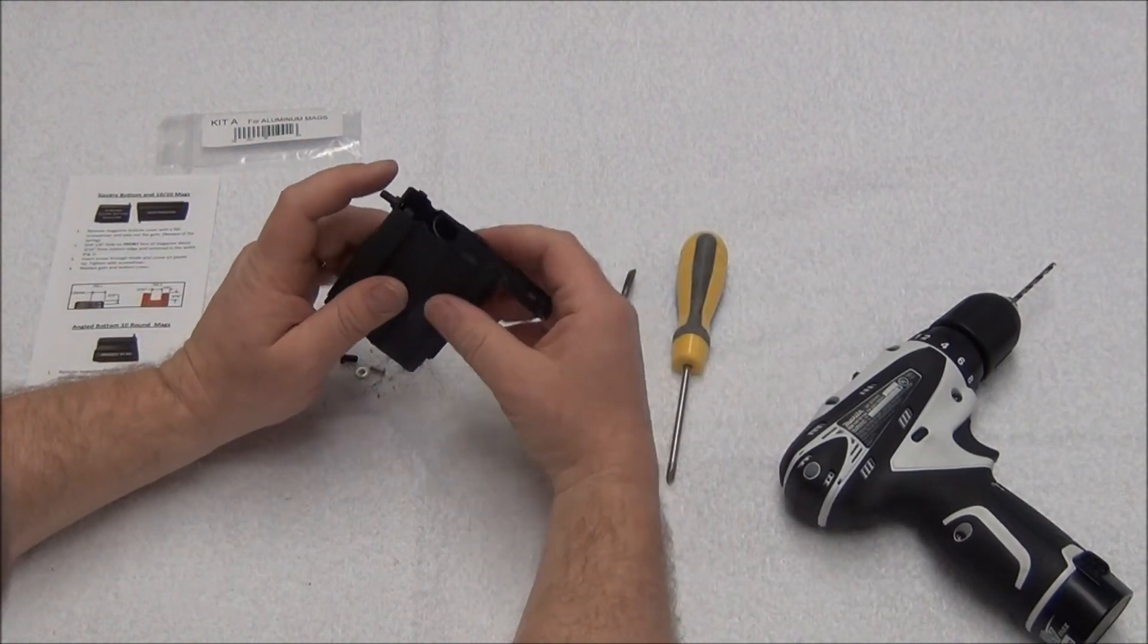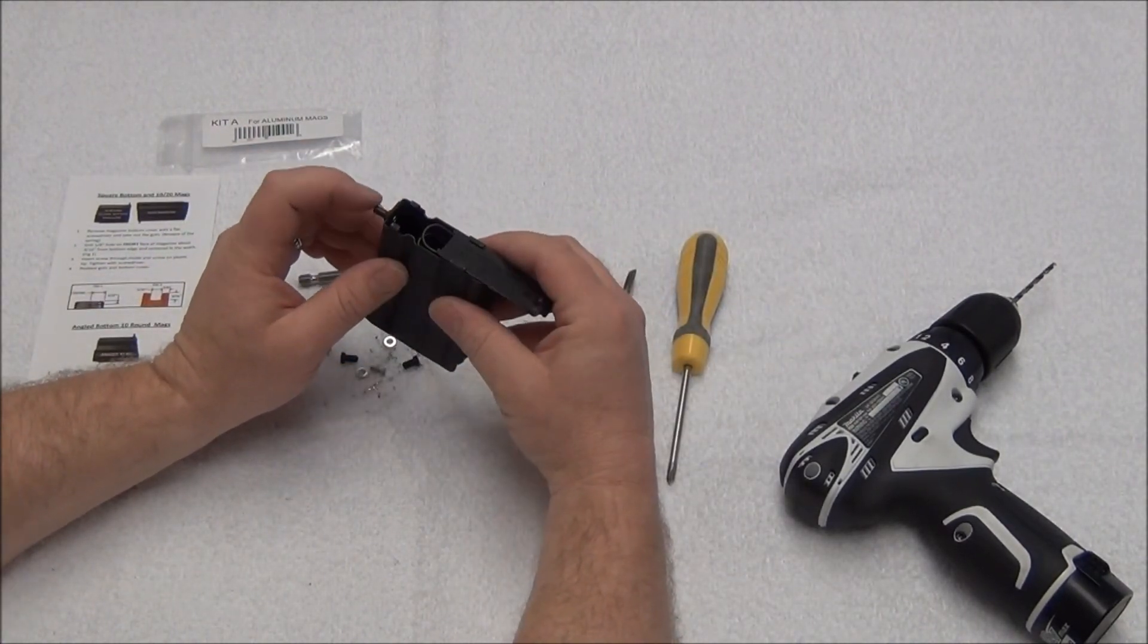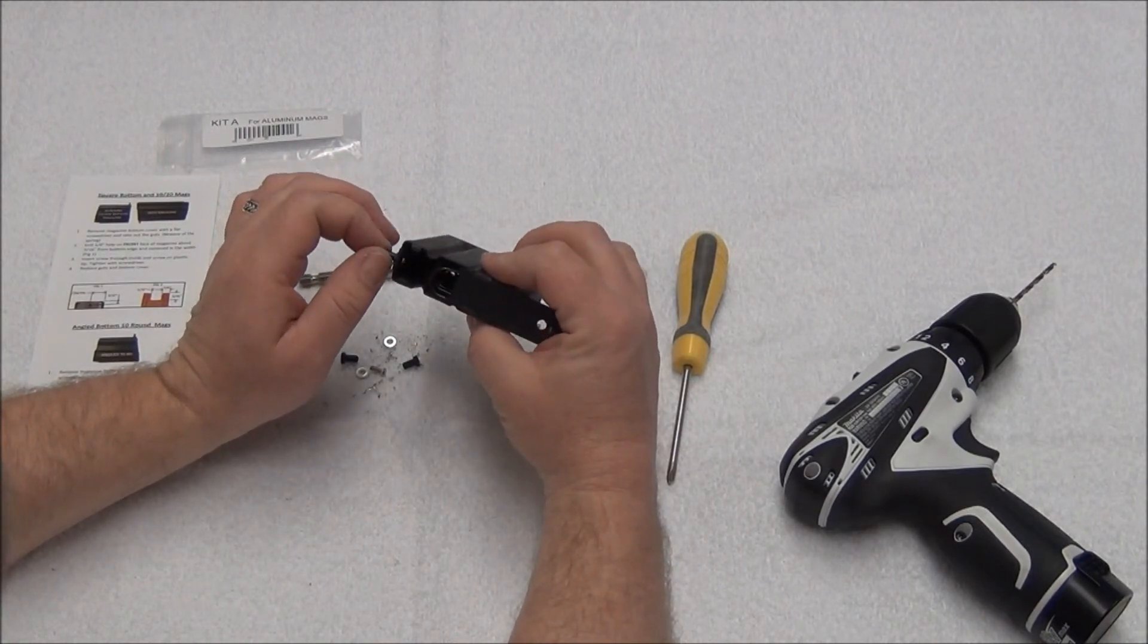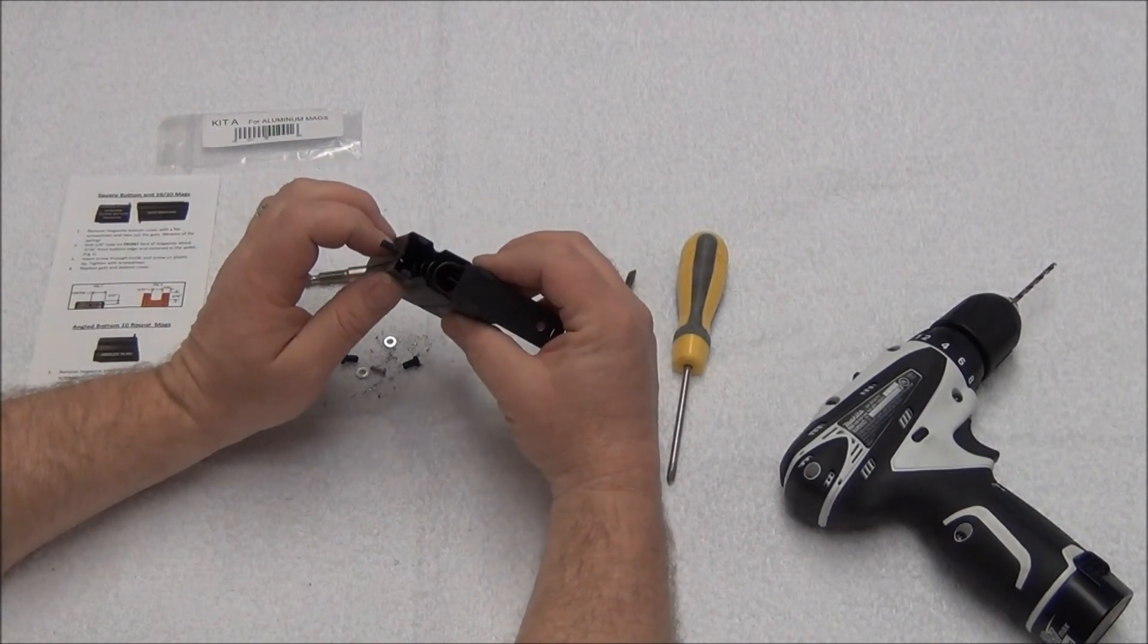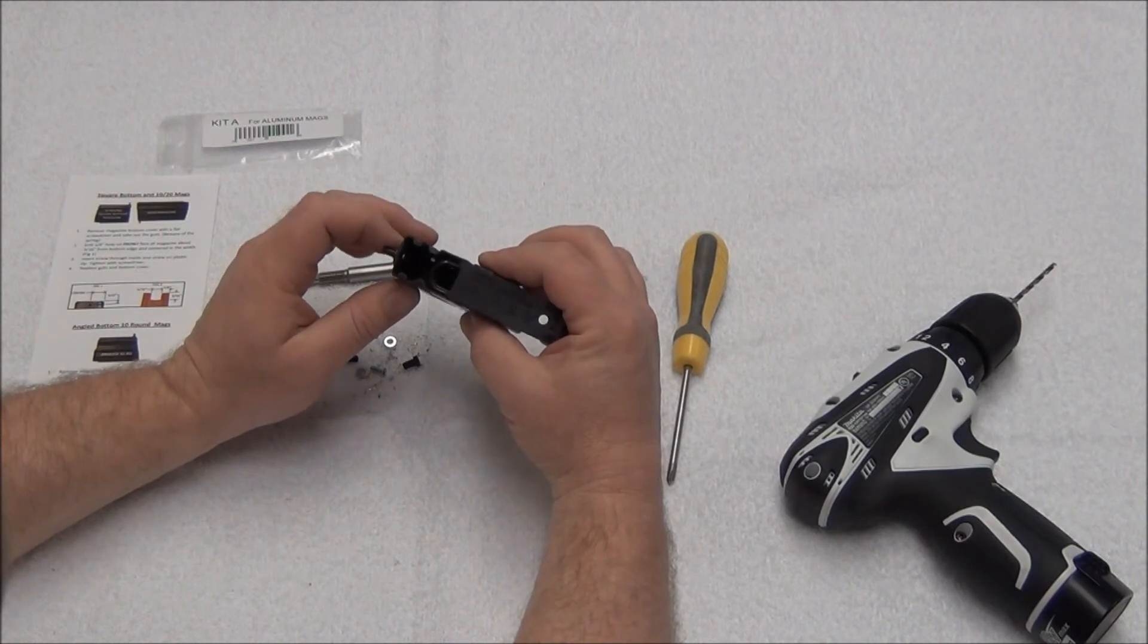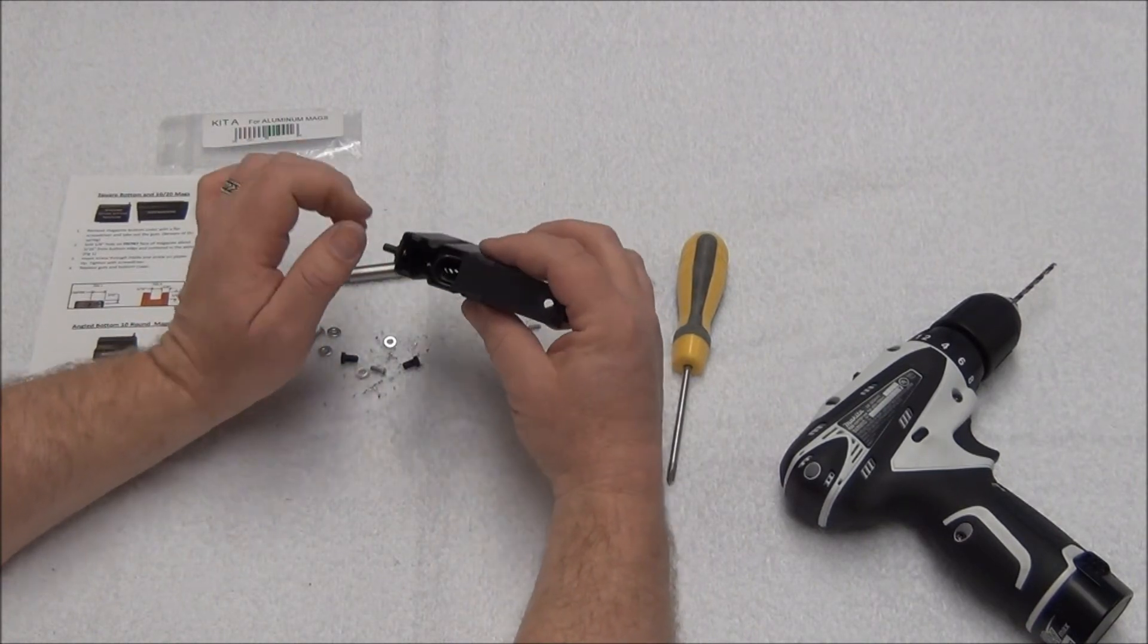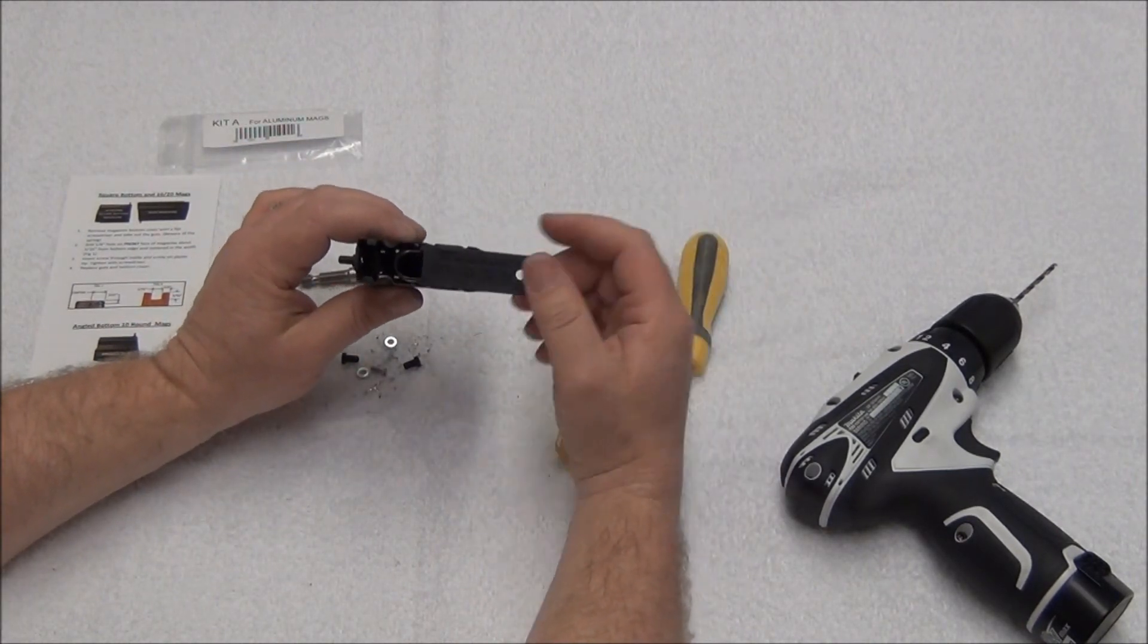Now these tips are glass filled nylon. They do not require any thread locker. But if you feel the need, you can put thread locker on it and it won't eat the plastic, won't graze the plastic. These are super strong and the threads are really tight. It really doesn't need it, but if you do feel the need, you can.